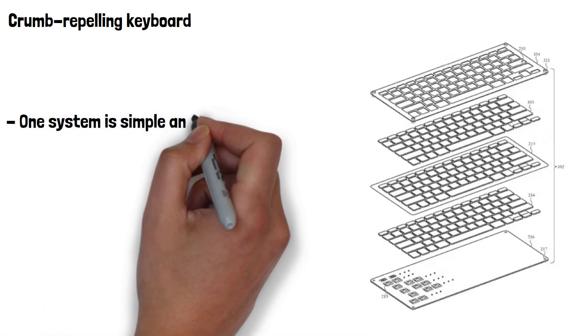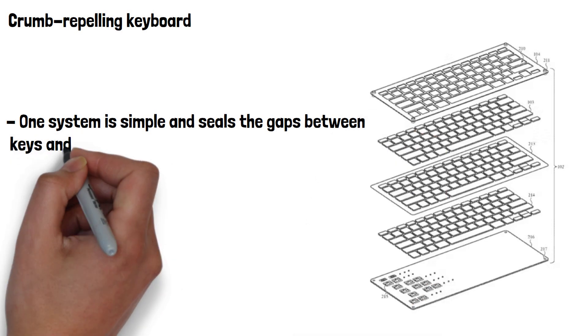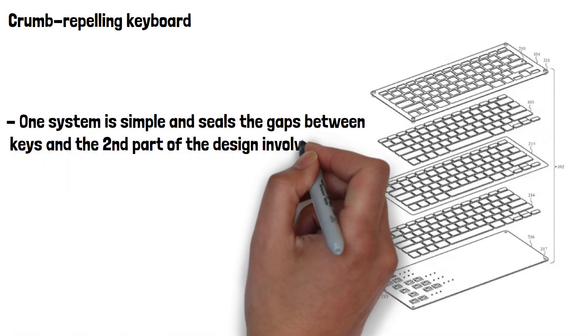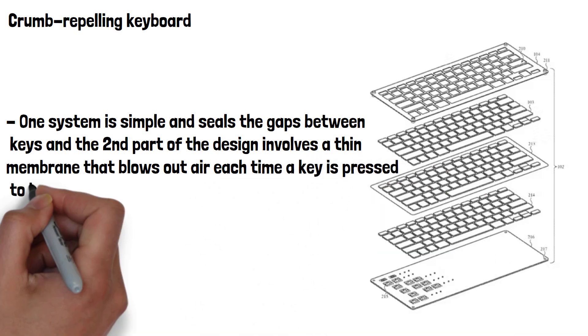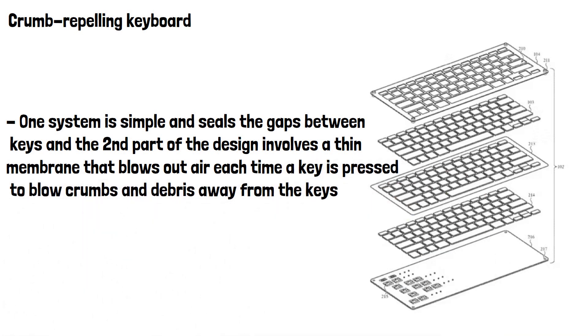One system is simple and seals the gap between the keys, and the second part of the design involves a thin membrane that blows out air each time a key is pressed. This will blow the crumbs and debris away from the keys.